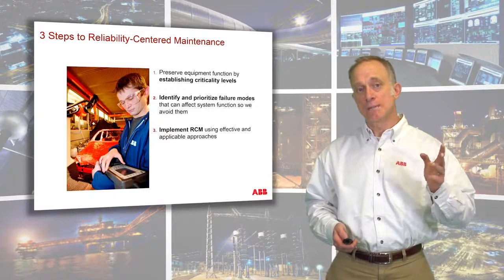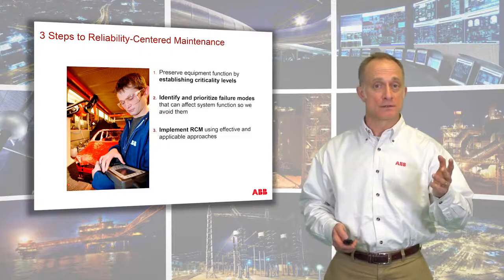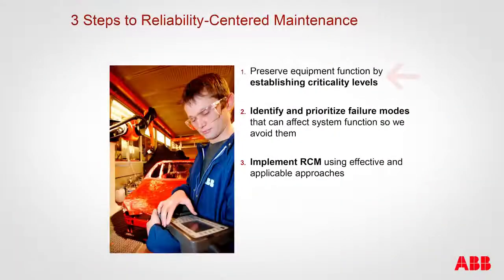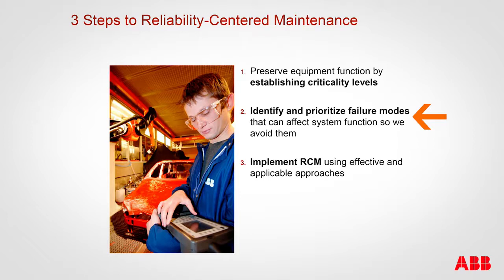Let's talk about the three main steps to effective reliability-centered maintenance. The first is to preserve equipment functionality by establishing criticality levels of the equipment. The second is to identify and prioritize failure modes — once we understand equipment criticality, we can look at what's likely to fail and put together plans to address it. And third, implement reliability-centered maintenance by choosing the correct approaches.